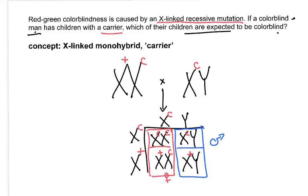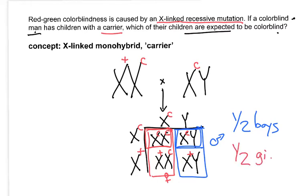In this outcome, half the boys are colorblind and half the girls are colorblind, so the outcome is the same for boys and girls. But you could probably think of ways to set this up where the outcome would be very different.